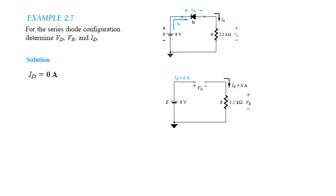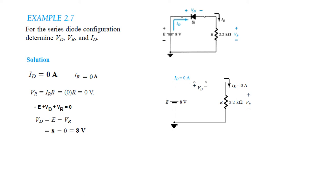Since IR is 0, VR equals IR times R, which is 0 times R, equals 0V. Voltage across the resistance is also 0V. Applying KVL to find VD: minus E plus VD plus VR equals 0, so VD equals E minus VR. E is 8V, VR is 0V.